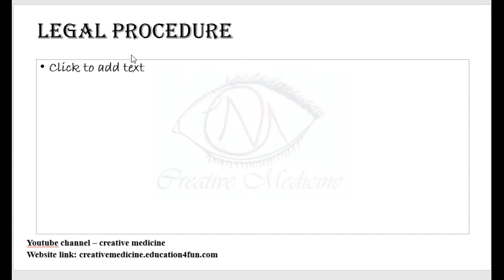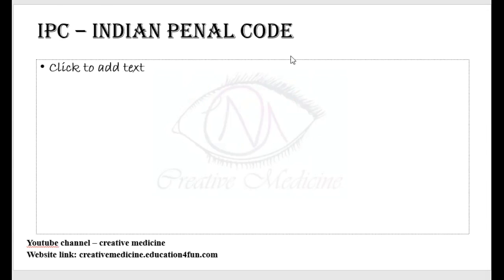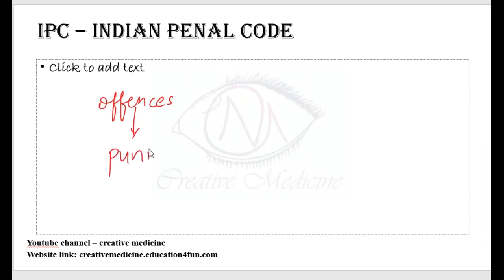IPC — Indian Penal Code — defines the offenses and prescribes punishment. For example, it defines murder, dowry death, etc., and it prescribes the punishment for those offenses.